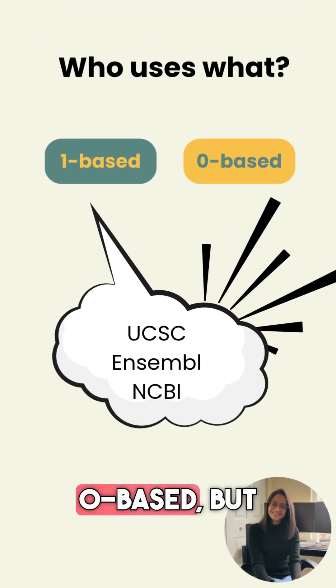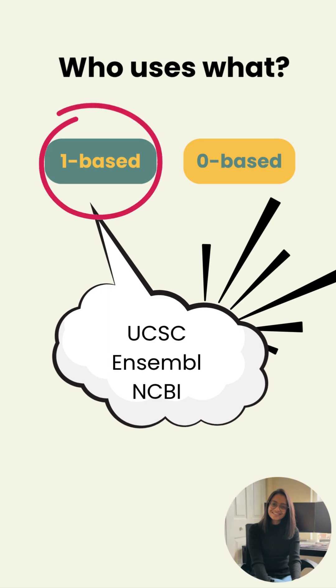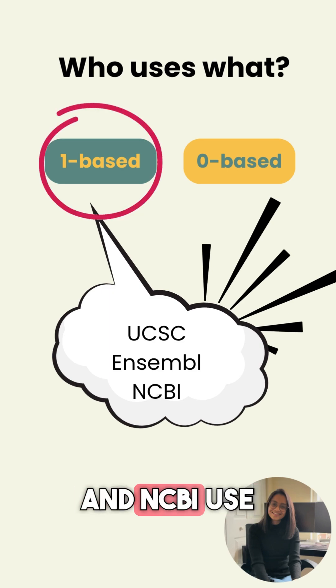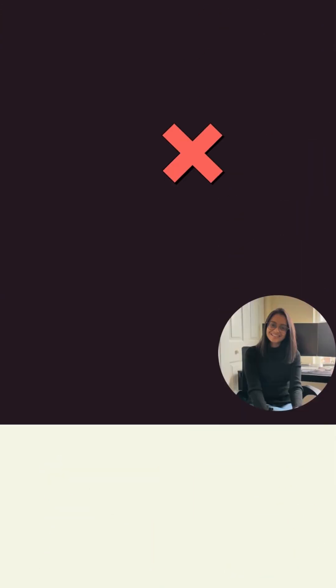UCSC stores coordinates internally as zero-based but displays them as one-based, whereas Ensembl and NCBI use one-based across the board.